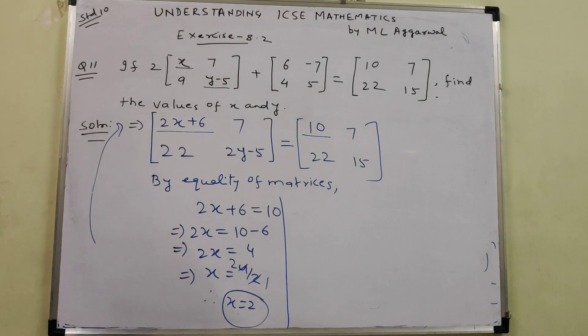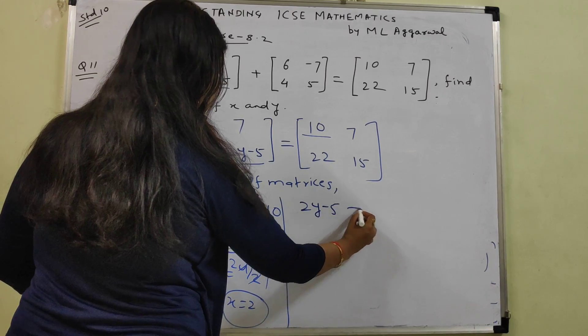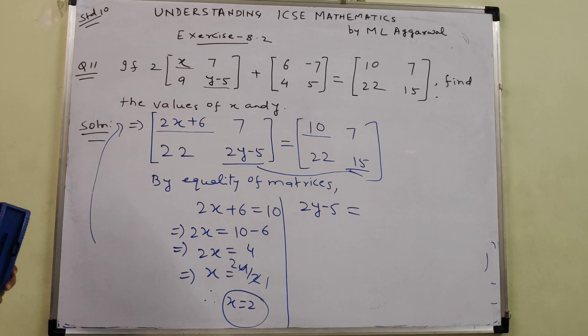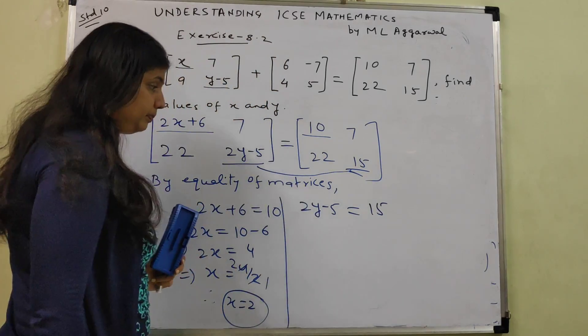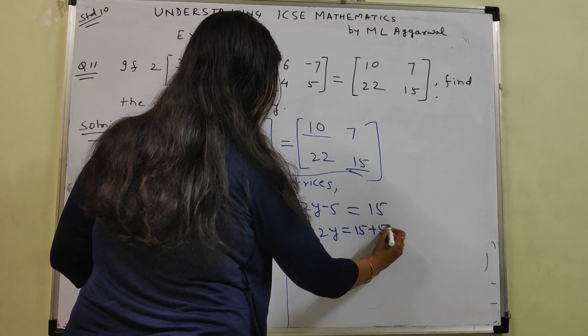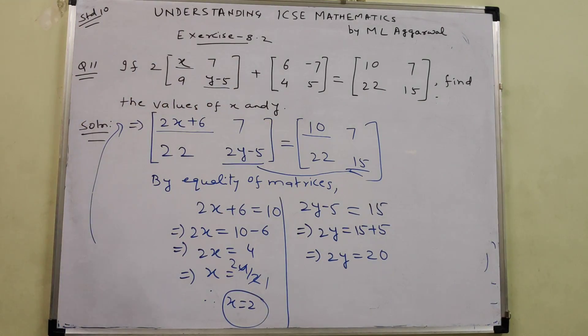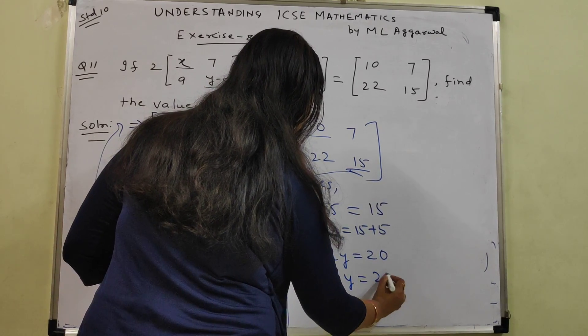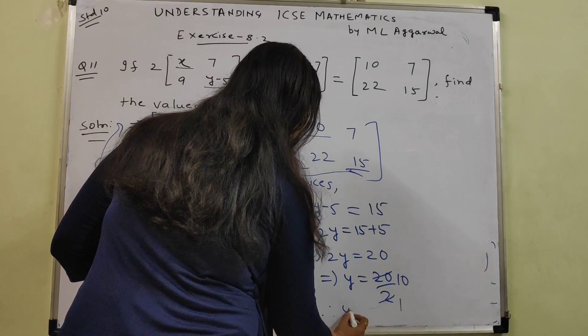Next we can equate 2Y minus 5 equal to 15. These are corresponding elements of equal matrices, so they are going to be equal. 2Y minus 5 is equal to 15. So 2Y equals 15 plus 5, 2Y equals 20, Y equals 10. Thus we have got the value of Y also. That's 10.